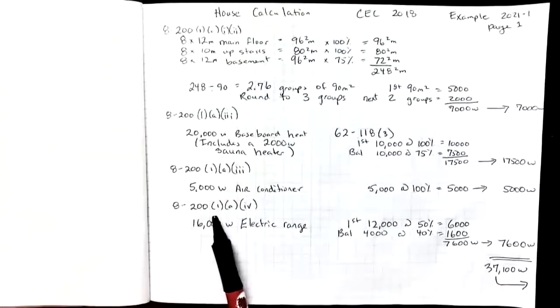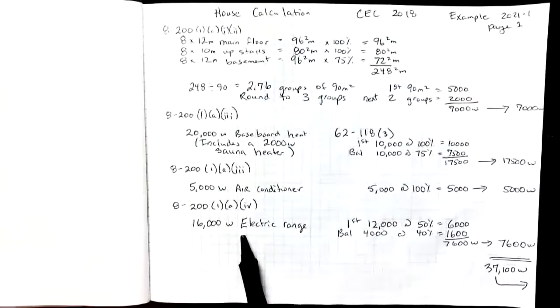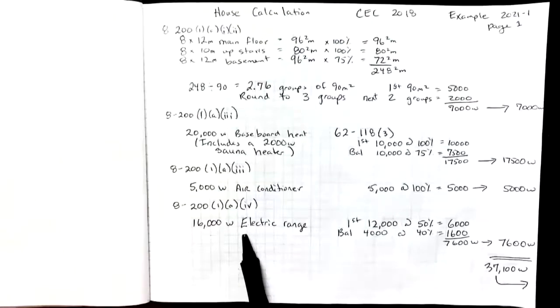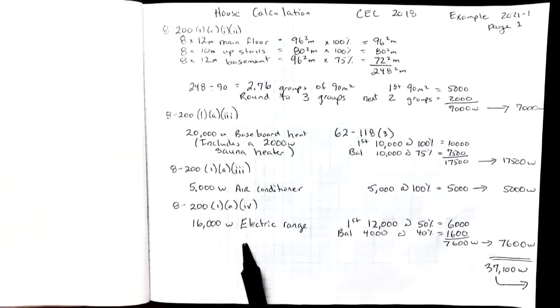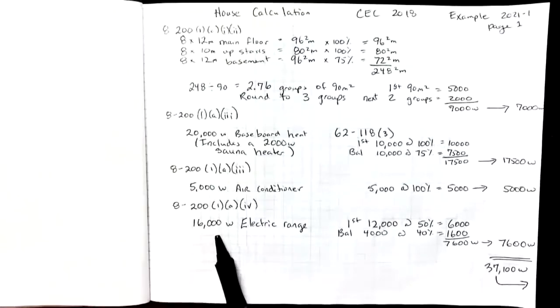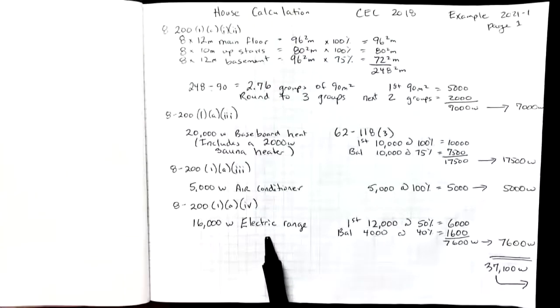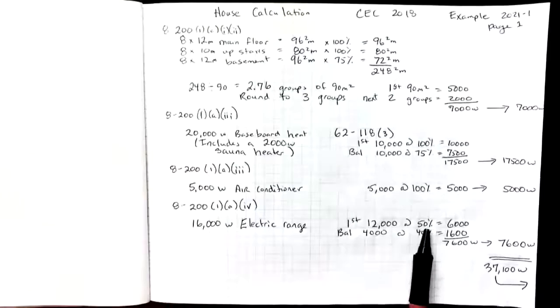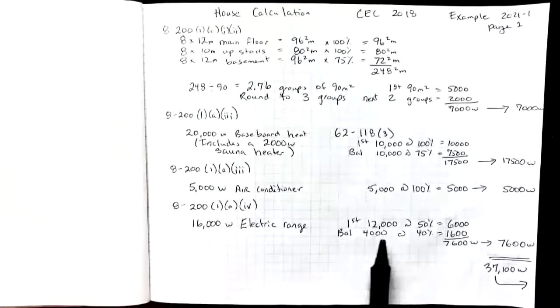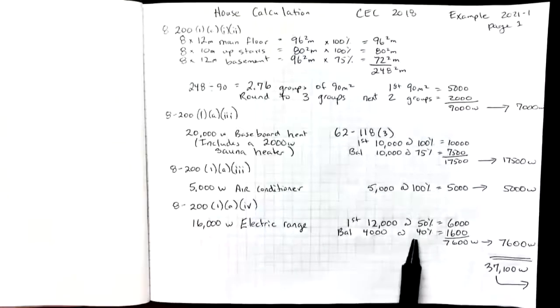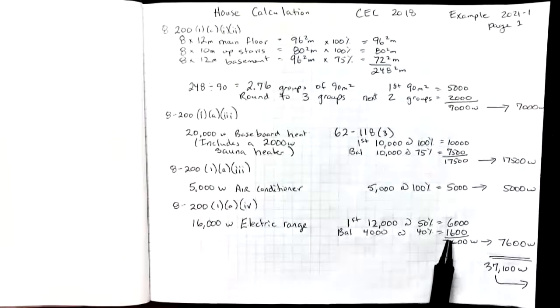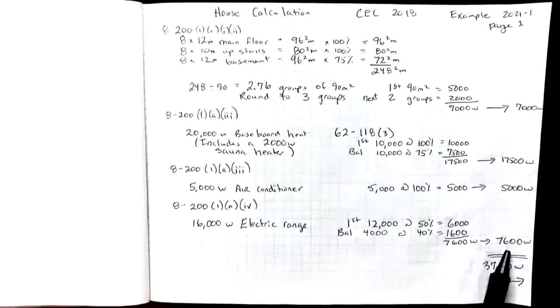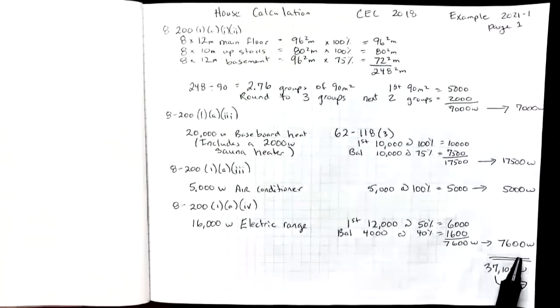Rule 8-201(A)(4) speaks to what we do for an electric range. Remember this is the demand factor towards the main service. There's a different rule for the actual branch circuit calculation. In this case I have a 16,000 watt electric range. The rule tells me to take the first 12,000 at 50% which is 6,000 and the balance at 40%. We have 4,000 left over. Gives me an additional 1,600. So it takes 7,600 watts towards the main service.